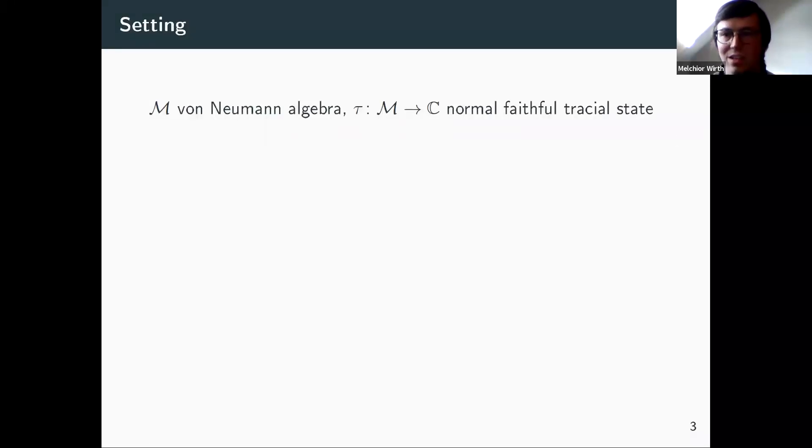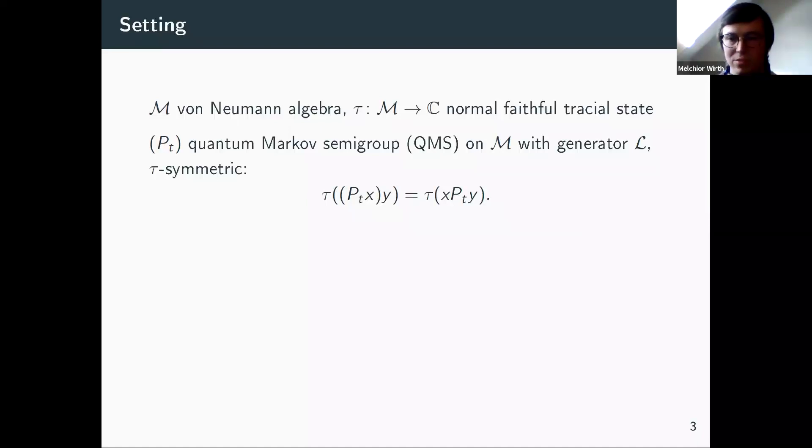Let's come to the setting. Not only did I steal half of my title from Matthias, I also stole some of the contents. So here these quantum Markov semigroups are exactly what Matthias talked about. We have a finite von Neumann algebra and a normal faithful tracial state. P_t is a semigroup of UCP maps with the usual continuity assumption, and it also has this tau symmetry condition.